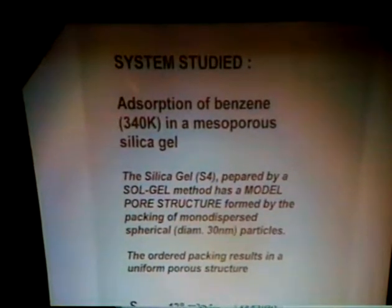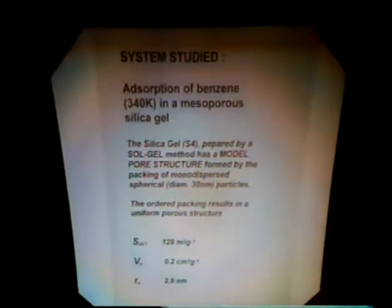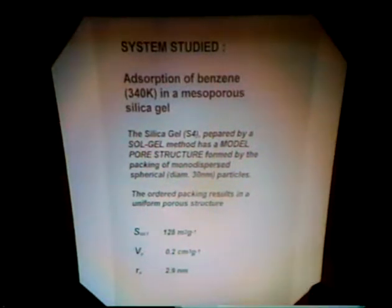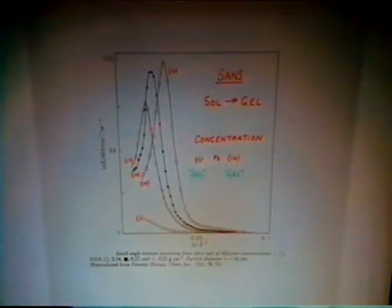Now to the system with mesopores: we study adsorption of benzene at 340 K using silica gel made by the sol-gel method. With the sol-gel method, one starts with spherical monodispersed particles, concentrating a sol to give a mesoporous gel. I've shown the scattering as you go from a sol to a gel — I won't go into detail about the analysis of such data, but it is a relatively simple system to study adsorption behaviour.